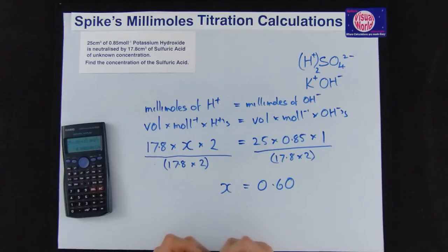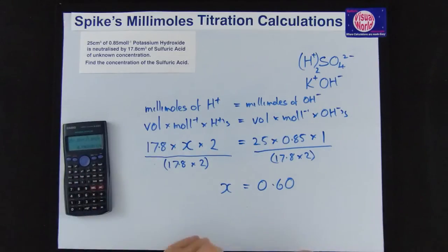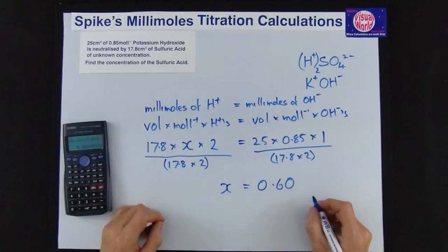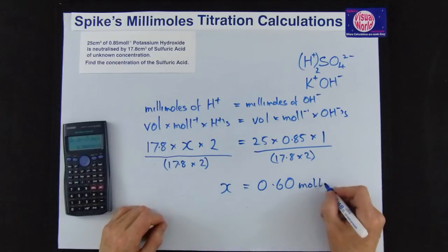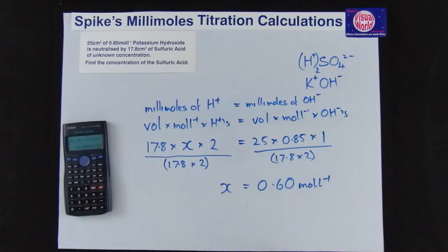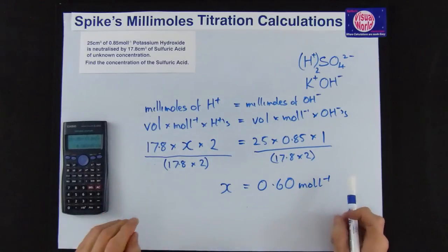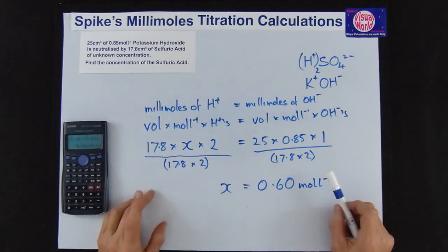3 places would give you 0.597. And that's your concentration so that's moles per liter and that's how easy it is to do titration calculations using millimoles.